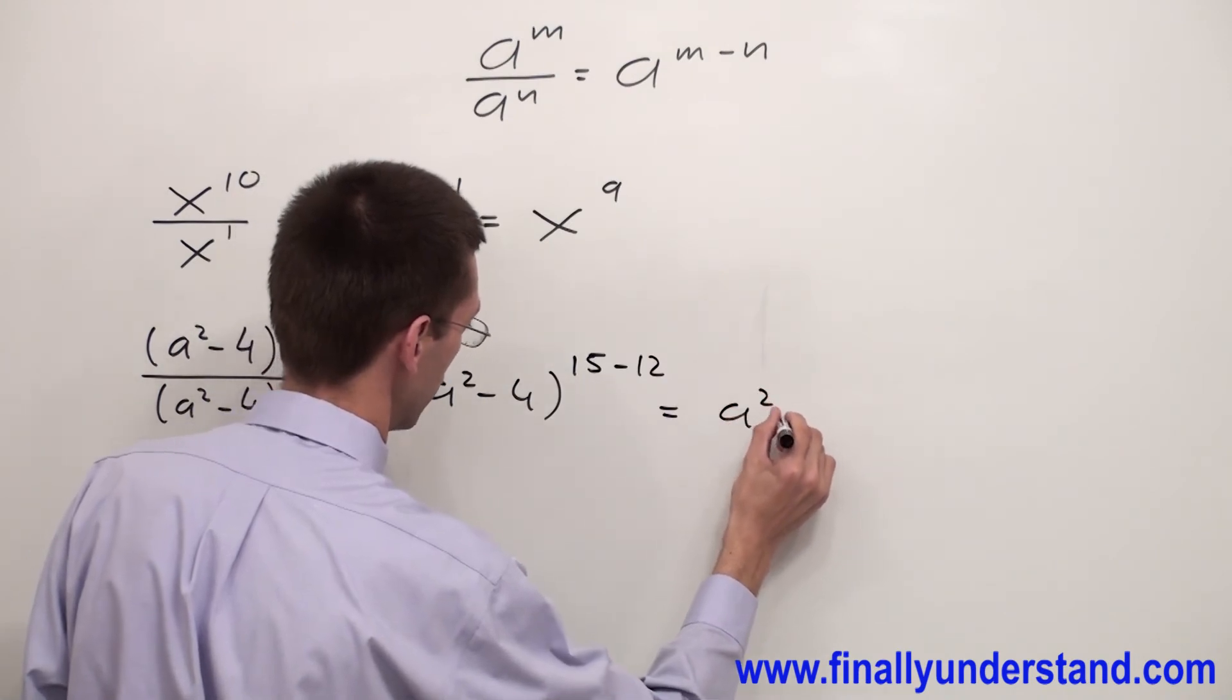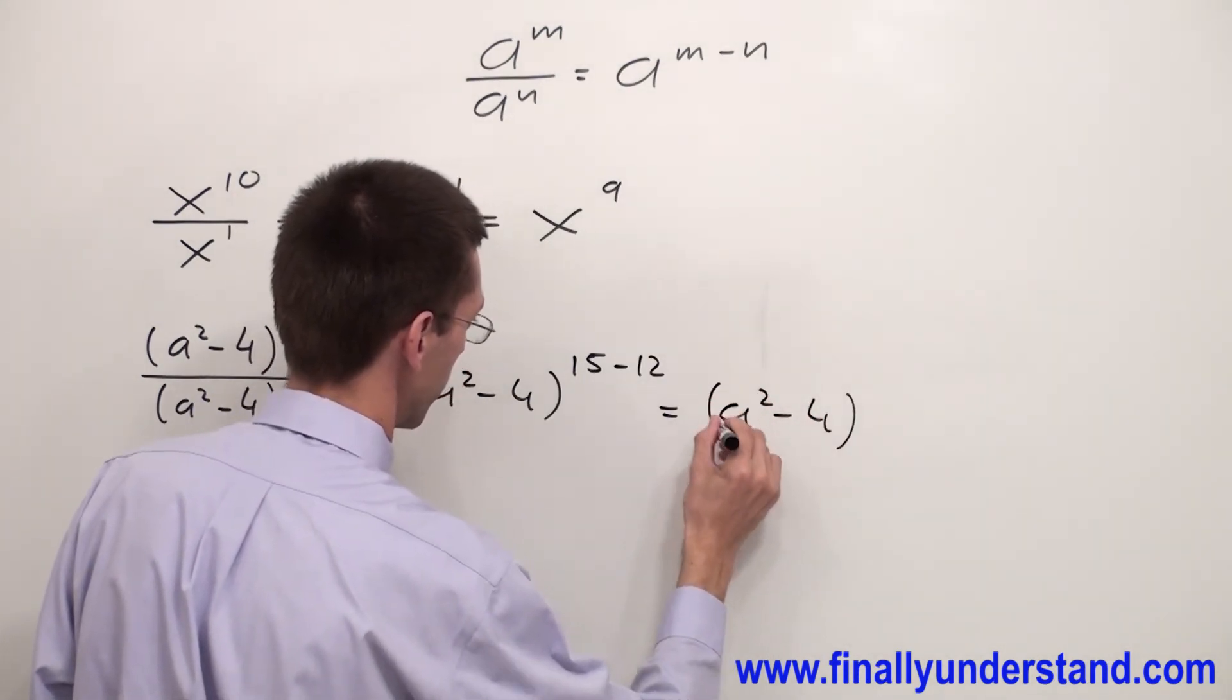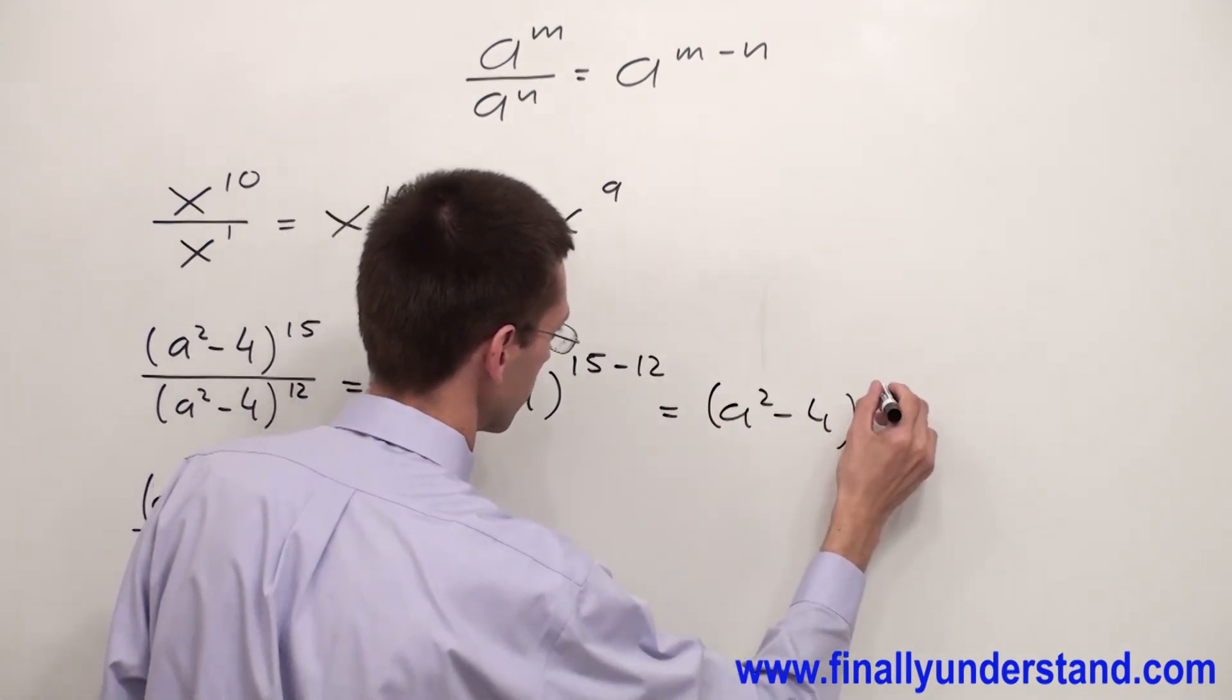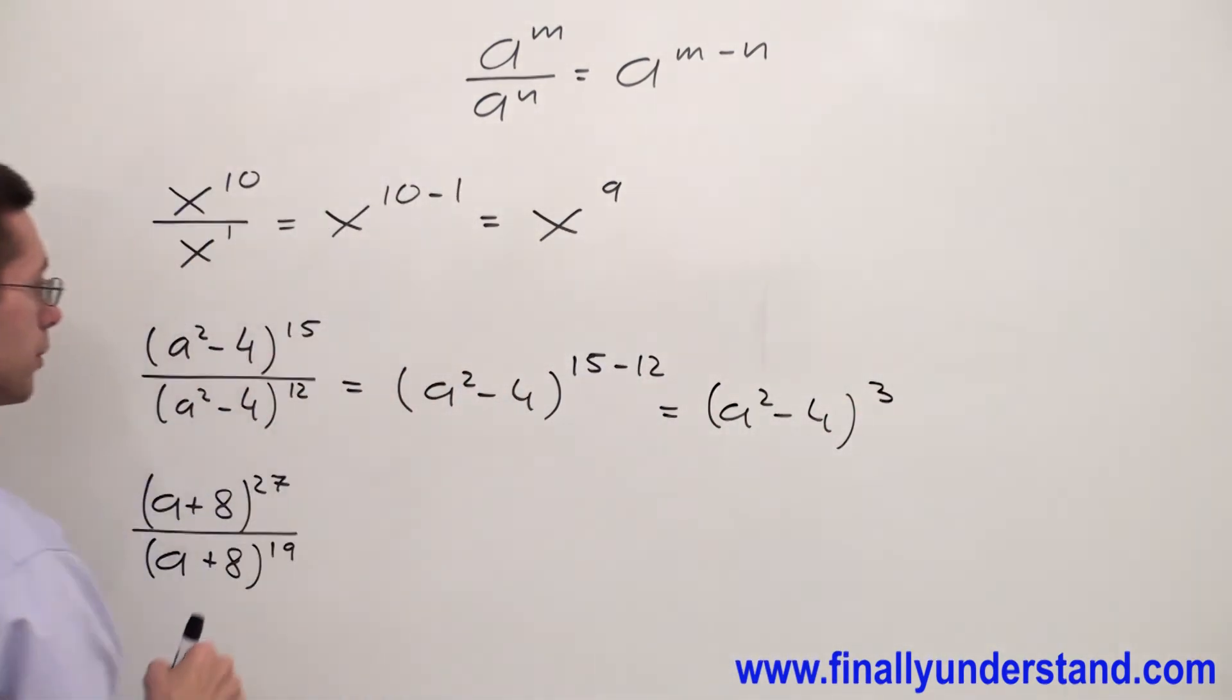That gives us (a² - 4)³, since 15 minus 12 is 3. This is the solution to this problem.